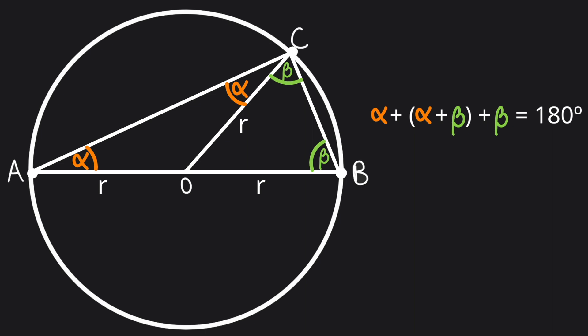We see that we have alpha twice and beta twice. Therefore, we can rewrite this as 2 alpha plus 2 beta is equal to 180 degrees. Divide both sides by 2 and we get alpha plus beta is equal to 90 degrees.